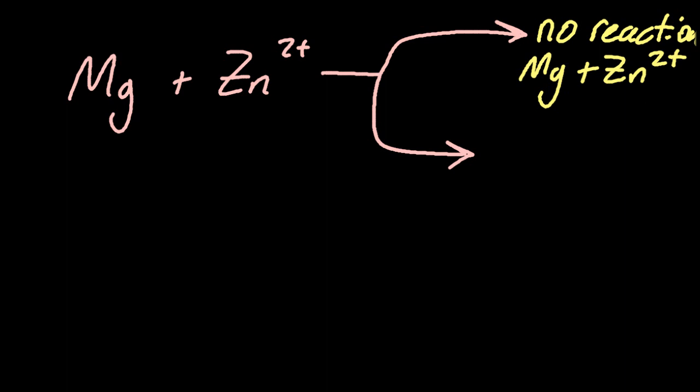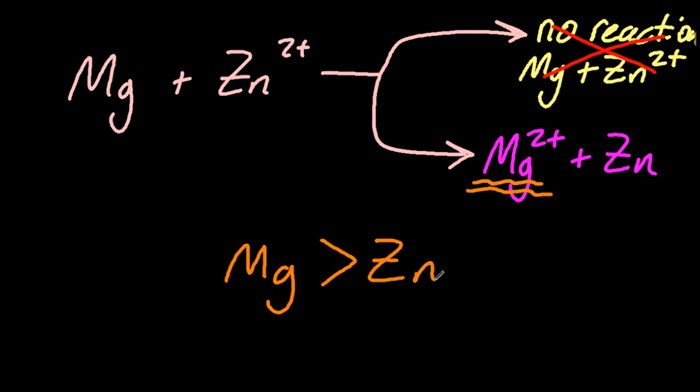The second thing that could happen is that it makes magnesium 2 plus and zinc. Now you know what? The second thing is actually what happens in real life. The most reactive ends up as an ion, so magnesium is more reactive than zinc.